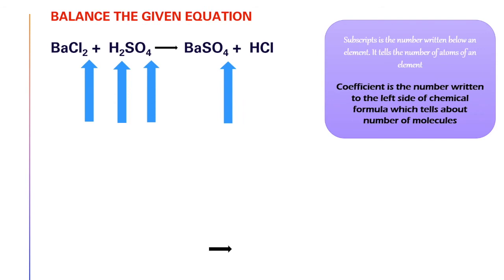For example, in chlorine if you see 2 below, that means there are 2 chlorine atoms in the equation. Then coefficient is the number written to the left side of a chemical formula. For example, if you see barium chloride, here in the front there is no number. It means one. One molecule of barium chloride is there.